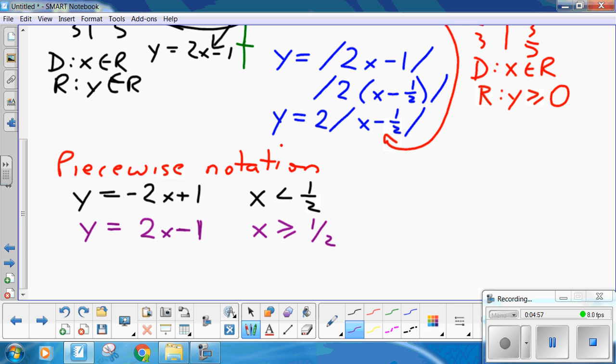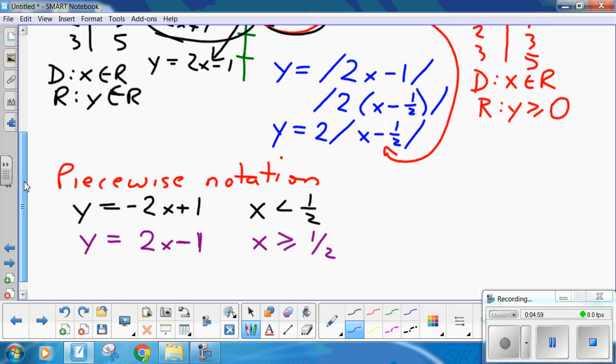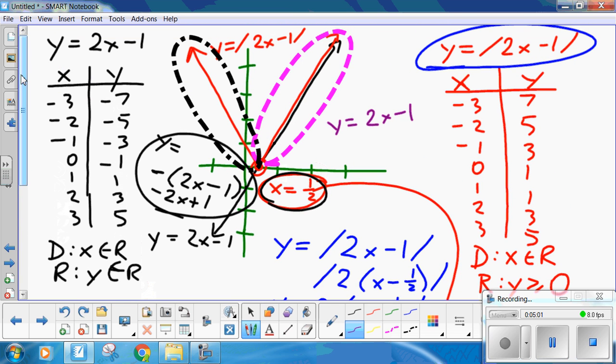It's the same function. 2x minus 1. Minus 2x plus 1. 2x minus 1. Minus 2x plus 1. At our critical value.